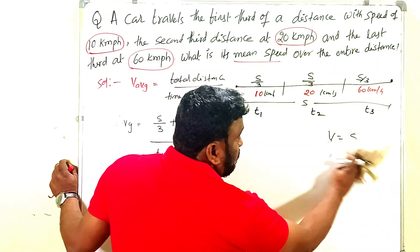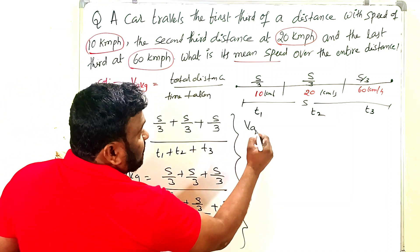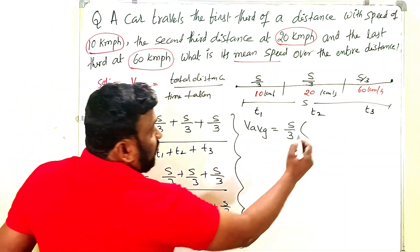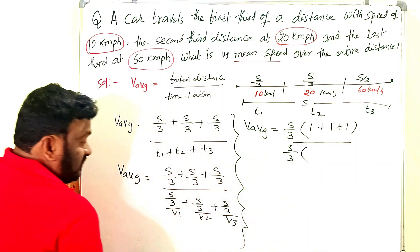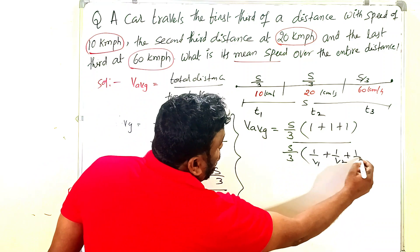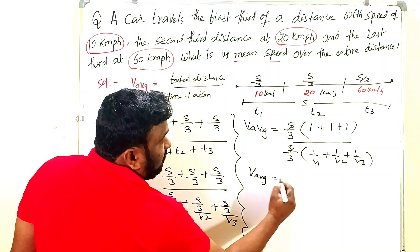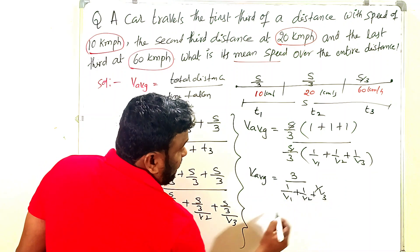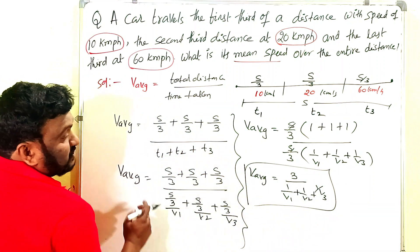Watch very carefully, don't skip the video. After canceling S/3, v_average equals 3 divided by (1/v1 + 1/v2 + 1/v3). This is the formula we have to use. This is the harmonic mean formula for equal distances covered at different speeds.